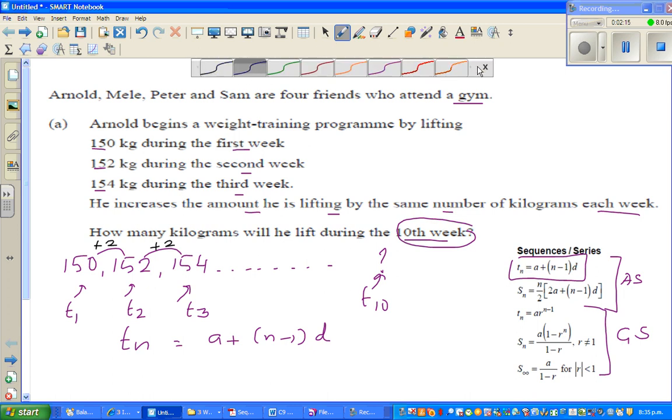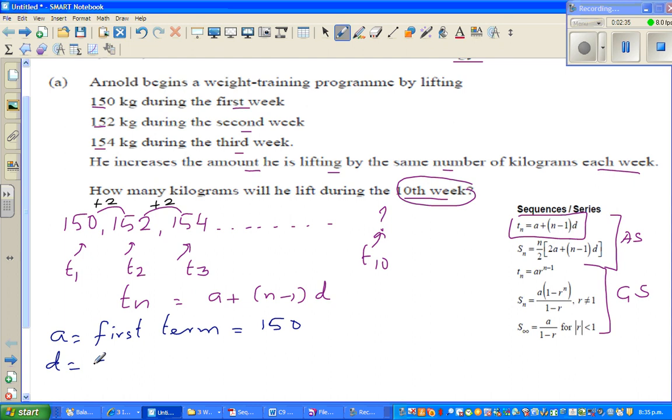Let us write what is a and what is d and what is n. We know a is the first term. The first term is 150. And for the formula d is known as the common difference.